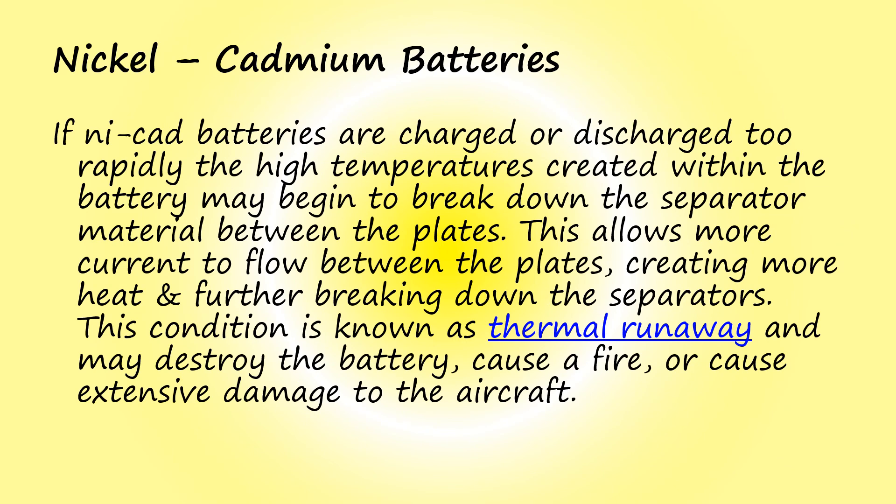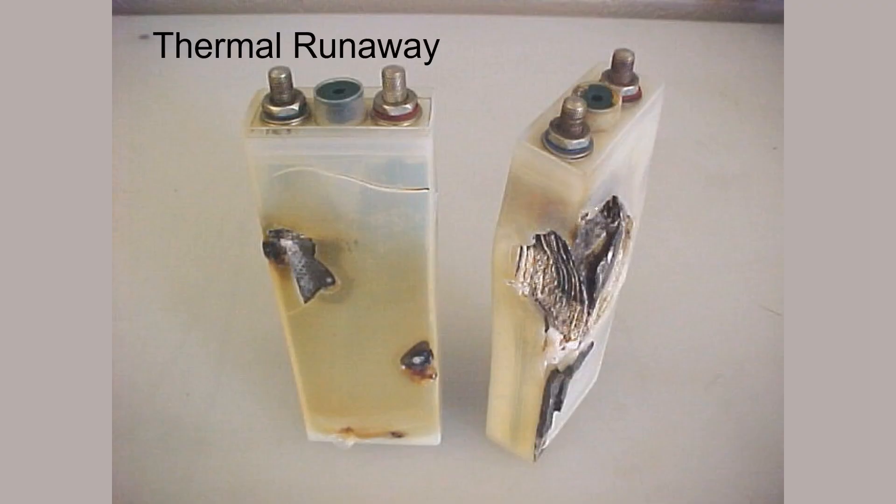If NICAT batteries are charged or discharged too rapidly, the high temperatures created within the battery may begin to break down the separator material between the plates. This allows more current to flow between the plates, creating more heat and further breaking down the separators. This condition is known as thermal runaway and may destroy the battery, cause a fire, or cause extensive damage to the aircraft. Pictured here you see examples of how thermal runaway has damaged a couple of NICAT battery cells.